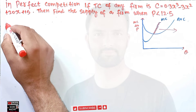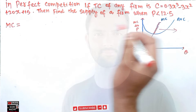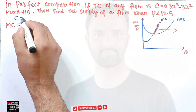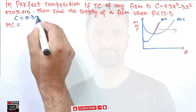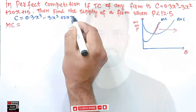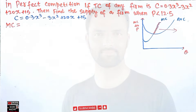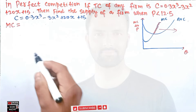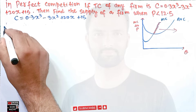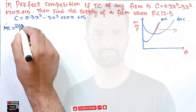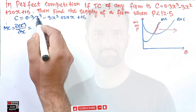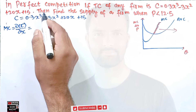The marginal cost is simply the derivative of the total cost function. Our total cost is C = 0.3x³ - 3x² + 20x + 15. Taking the derivative with respect to x: the derivative of x³ is 3x² by the power rule, so 0.3 × 3x² gives us 0.9x².